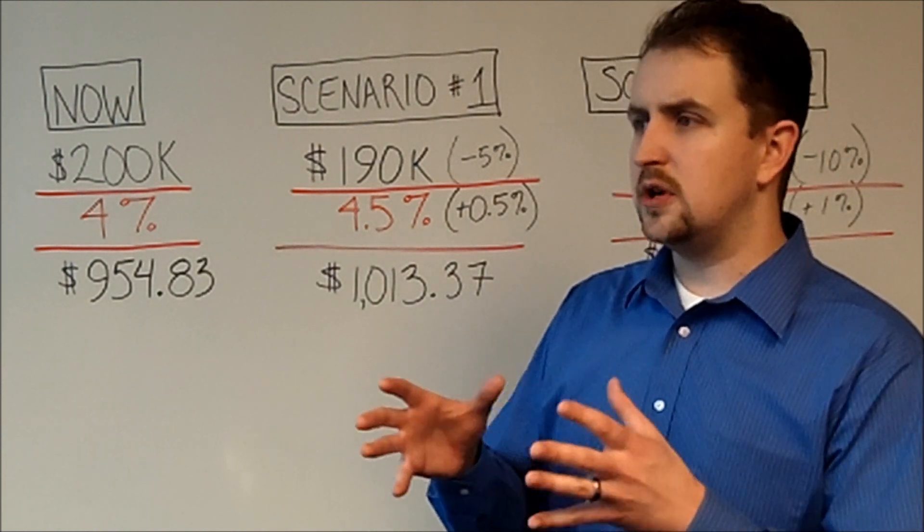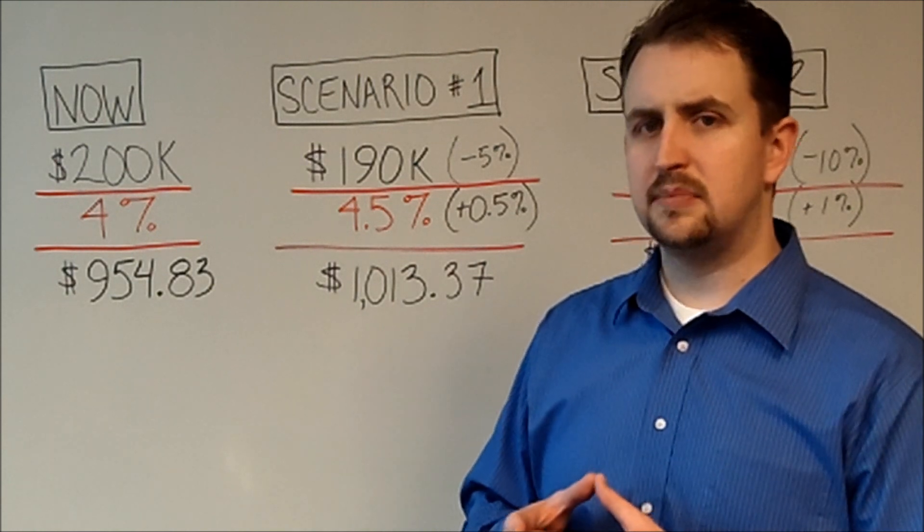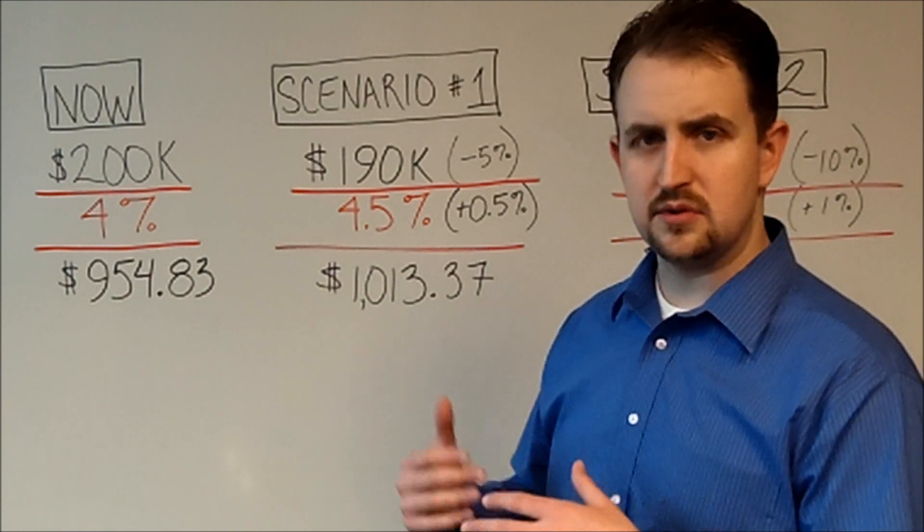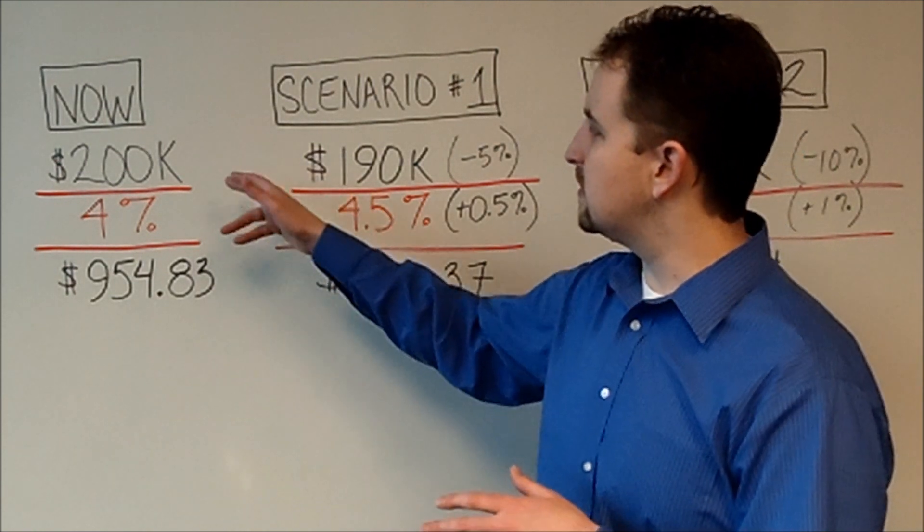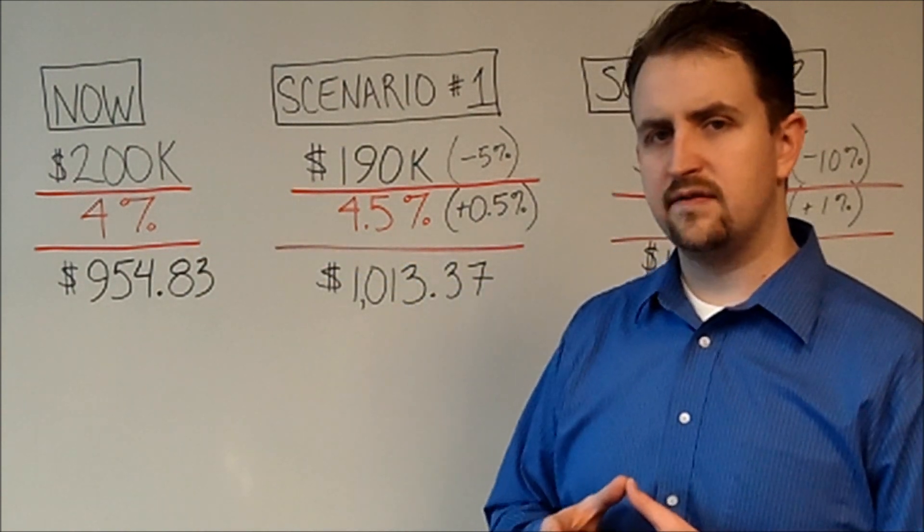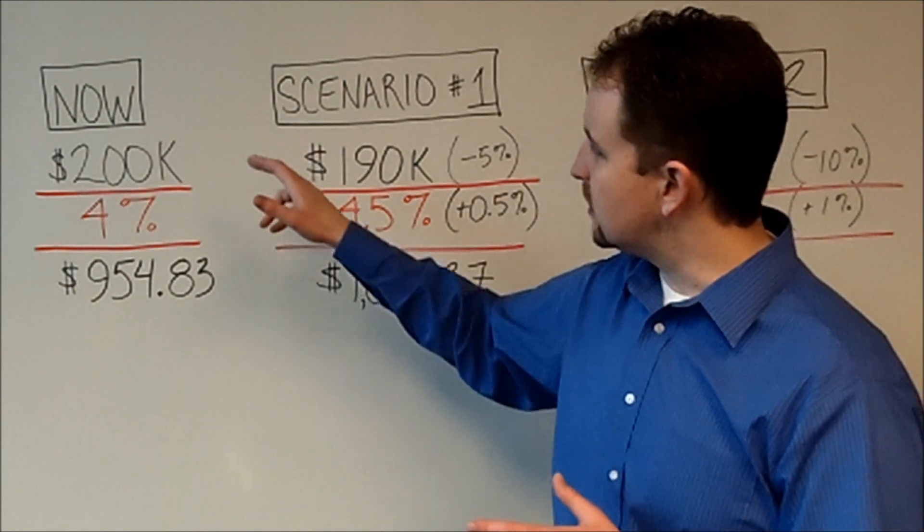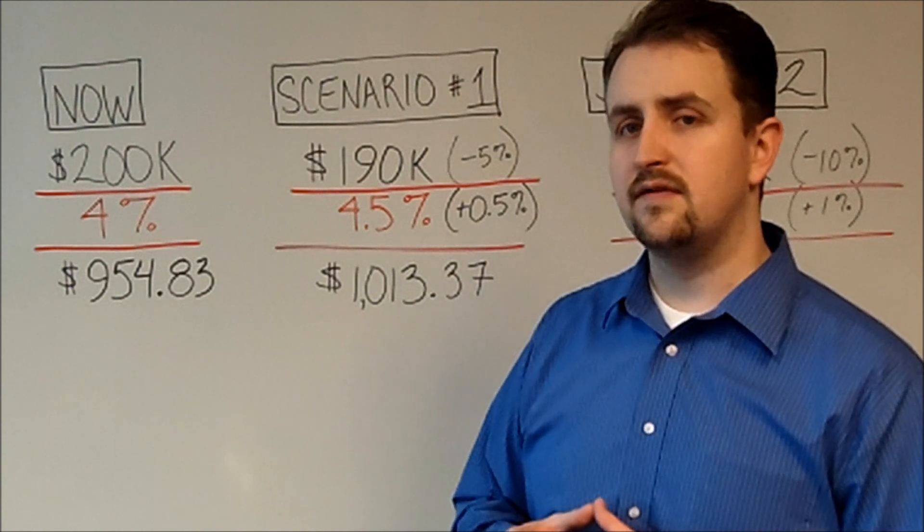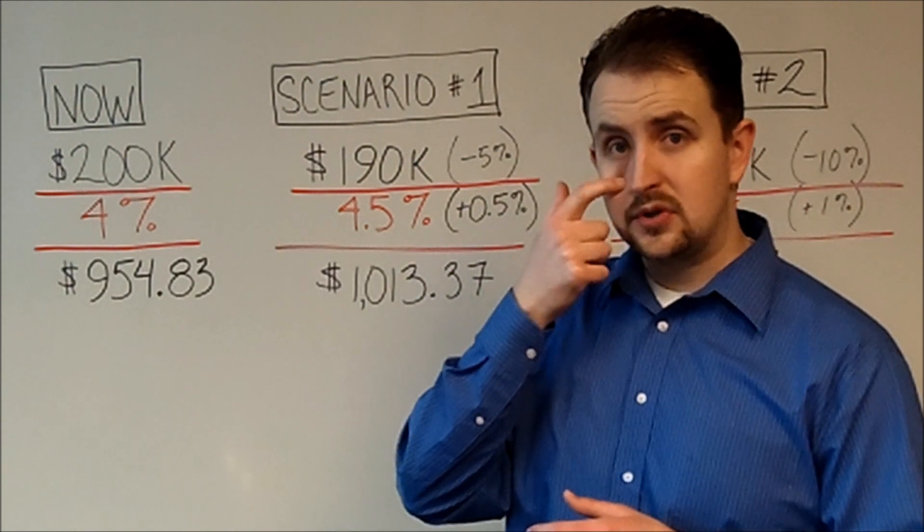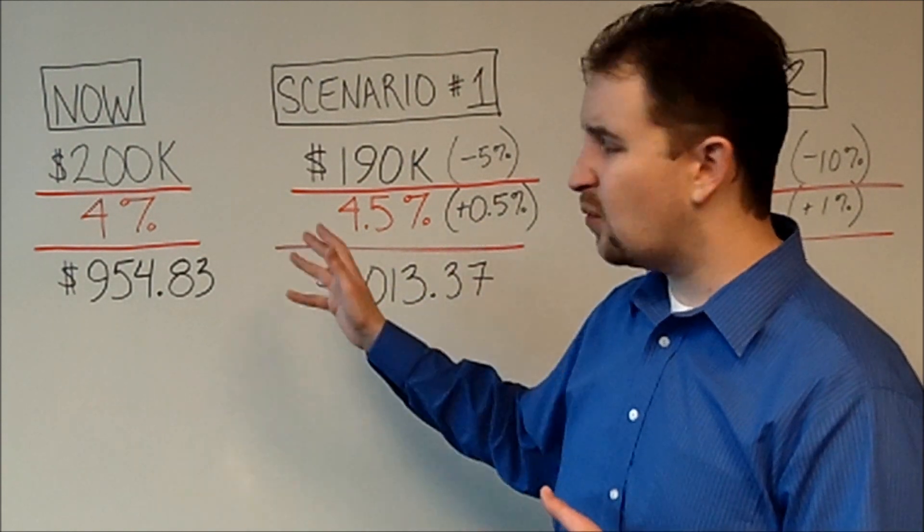So if this was a situation where I'm trying to work with a buyer to show them potentially how this is costing them, I'd walk them through this exercise in this way. So Mr. and Mrs. Buyer, we have the home that you're looking for. You said you love that home. It's listed at $200,000 and I feel that that's market value. Today's rates are about 4% and so that means that your monthly payment would be right around $955.